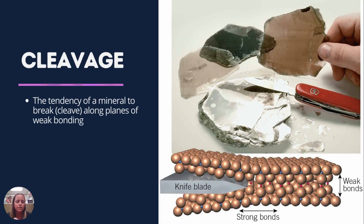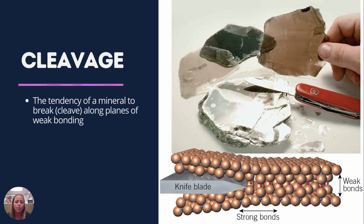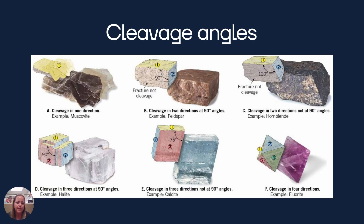When a mineral starts to break, it's going to break in one of two ways — it's either going to exhibit what we call cleavage, or it's going to fracture. Cleavage is when a mineral will break along planes of weakness. Here we have weak bonds in one direction and strong bonds in another, and along those weak bonds is where those cleavage planes will lie. Each mineral is going to exhibit either cleavage or fracture. If it has cleavage, it's going to exhibit one to maybe four planes at which it's meeting.